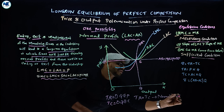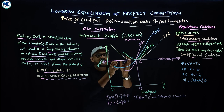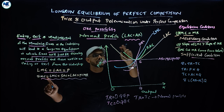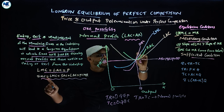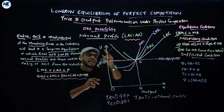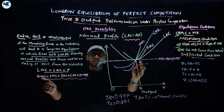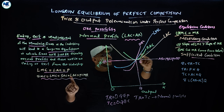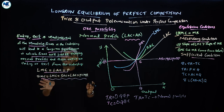The full equilibrium condition in the figure for perfect competition in the long run is: short-run marginal cost equals long-run marginal cost equals short-run average cost equals long-run average cost equals price equals average revenue equals marginal revenue. The AR equals MR line is horizontal; the LAC and LMC are U-shaped; and the SMC and SAC are also drawn accordingly.